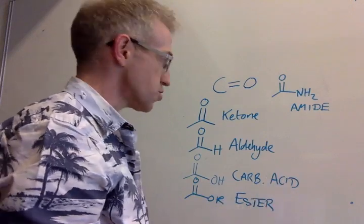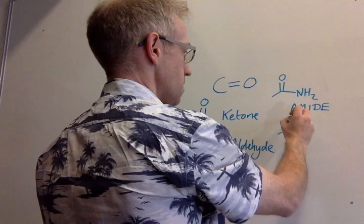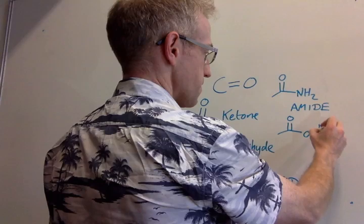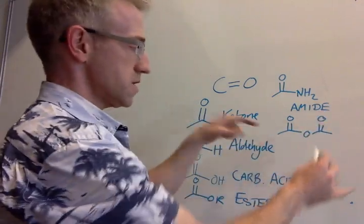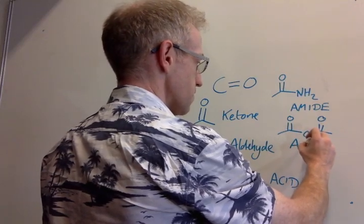And then the two that we should also cover, which are a little bit less common, are where the carbonyl is bonded here to another oxygen, which is itself then bonded to another carbonyl group. And we call this an anhydride or an acid anhydride.